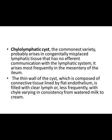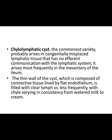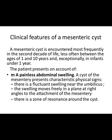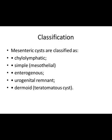They are found in the mesentery and are classified into the following four types: chylolymphatic cysts, simple mesothelial cysts, enterogenesis, urogenital remnants, and dermoids. These are found in the mesentery and they present clinically as mesenteric cysts.